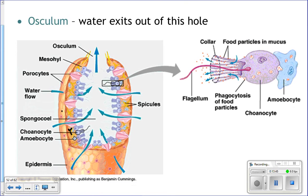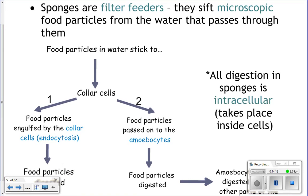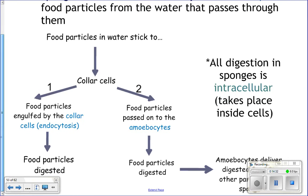Water flows in through the pore cells, driven by the collar cells, and then exits out through the opening at the top of the sponge called the osculum — a large opening at the top. A sponge will either have just one large osculum, or depending on the species, more than one. After food gets brought in and captured by the collar cells and engulfed, that food can take two paths — the collar cells themselves can eat and digest the food for their own energy to keep pumping water.